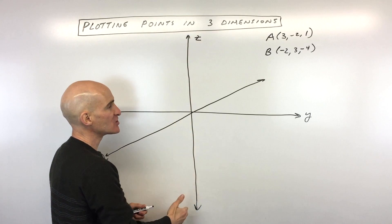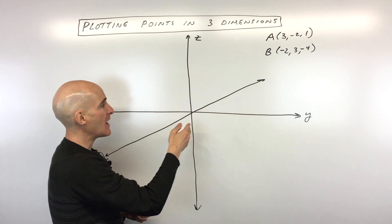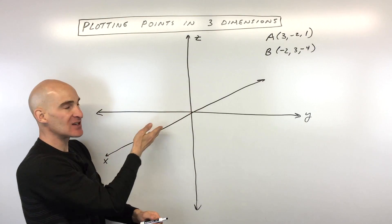So we've got our z-axis which goes vertically like this, our y-axis which goes horizontally, and this x-axis here.